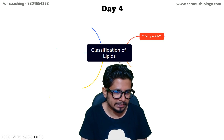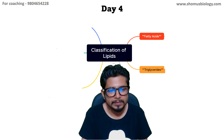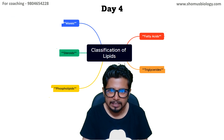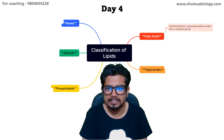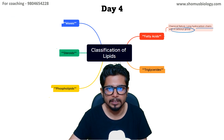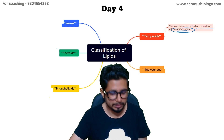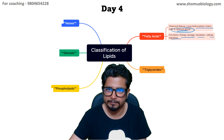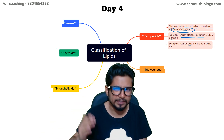The first type is fatty acids. Among fatty acids, then we have triglycerides, then phospholipids, then steroids, and the fifth one, waxes — these are all five different types of lipids. Now, the chemical nature of fatty acids is a long hydrocarbon chain with a carboxyl group. The function of fatty acids includes energy storage, insulation, and cellular signaling. Examples include palmitic acid, stearic acid, and oleic acid.